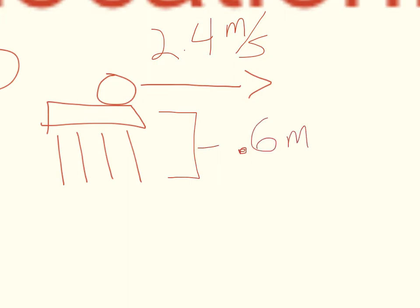Alright, so that's step one done. I've drawn my picture. Moving on to step two, I'm going to make my list of variables.